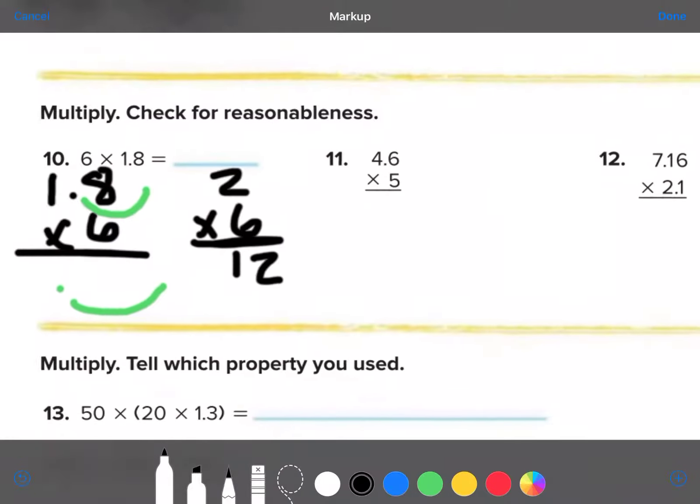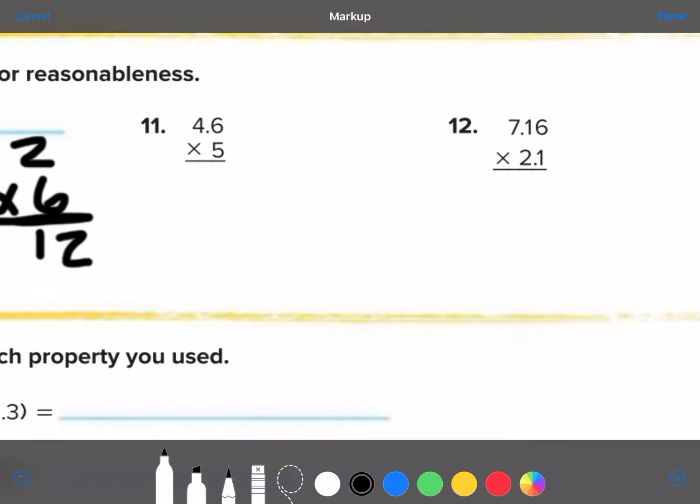Okay. Number 11. Go ahead and multiply 4.6 times 5. Make sure that you check for reasonableness by saying that 4.6 is really close to 5. 5 times 5 is 25. So, your answer is going to be somewhere between 20 and 25.